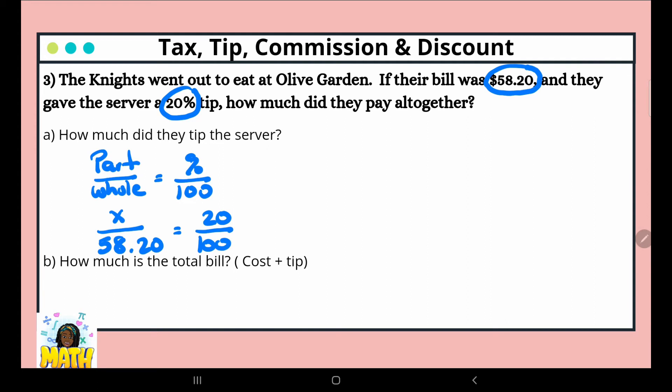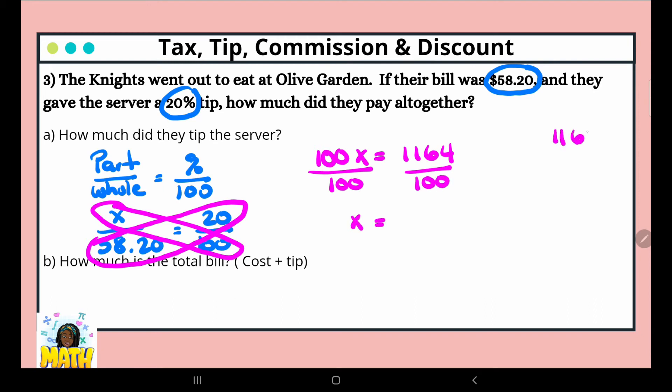We cross multiply, so x times 100, 58.20 times 20. So we have 100x equals—if you're struggling with multiplying decimals, go back and watch the lesson on how to stack and multiply. We'd multiply pretending like the decimal is not there, then we would count the number of places and put it back in our answer. So 58.20 times 20 is 1,164. And we divide both sides by 100. Dividing by 100 allows me to move my decimal two places to the left. So it's $11.64 is the amount of tip.